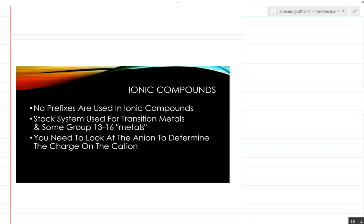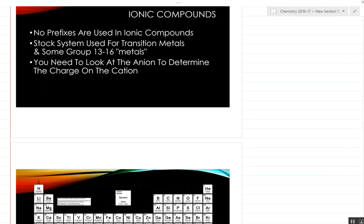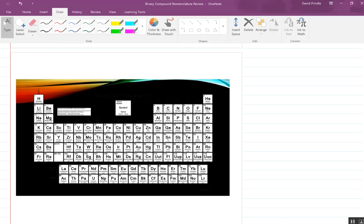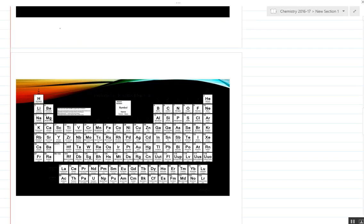We use Roman numerals, and we'll show you some examples of that. To figure out the Roman numerals, most of the time you have to look at the anion to determine the charge on the cation. These mainly apply to this group right through here and all the transition metals.